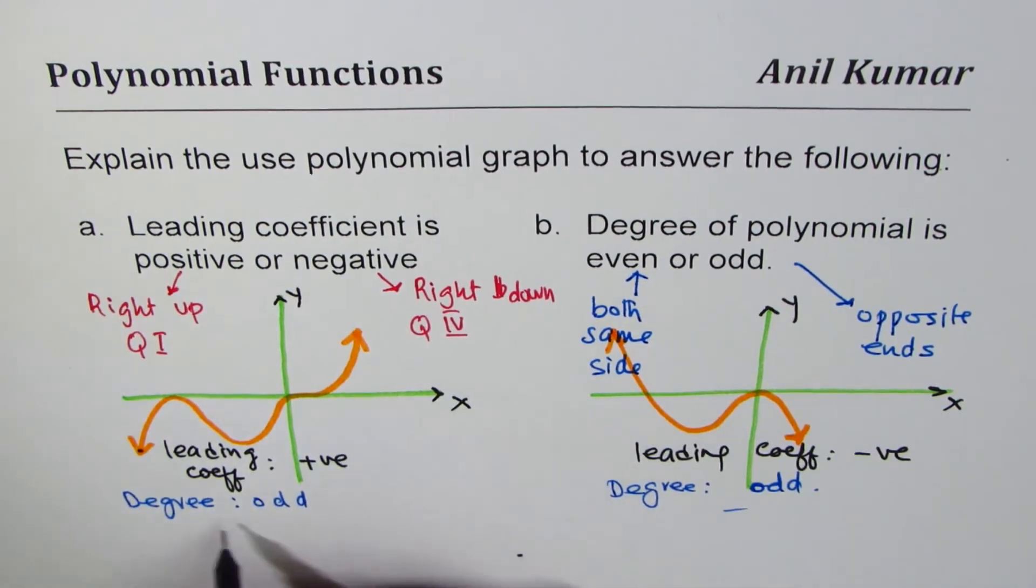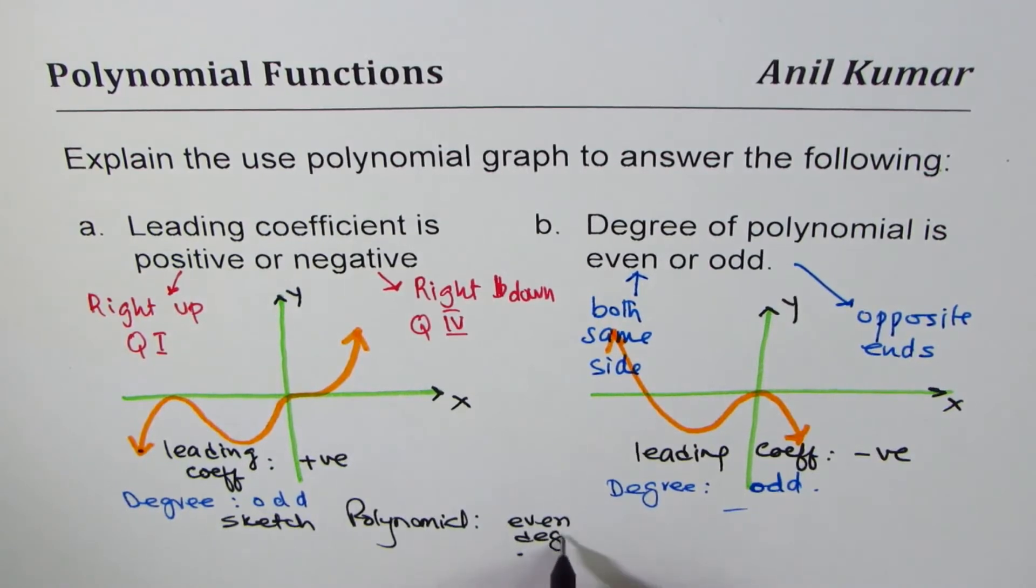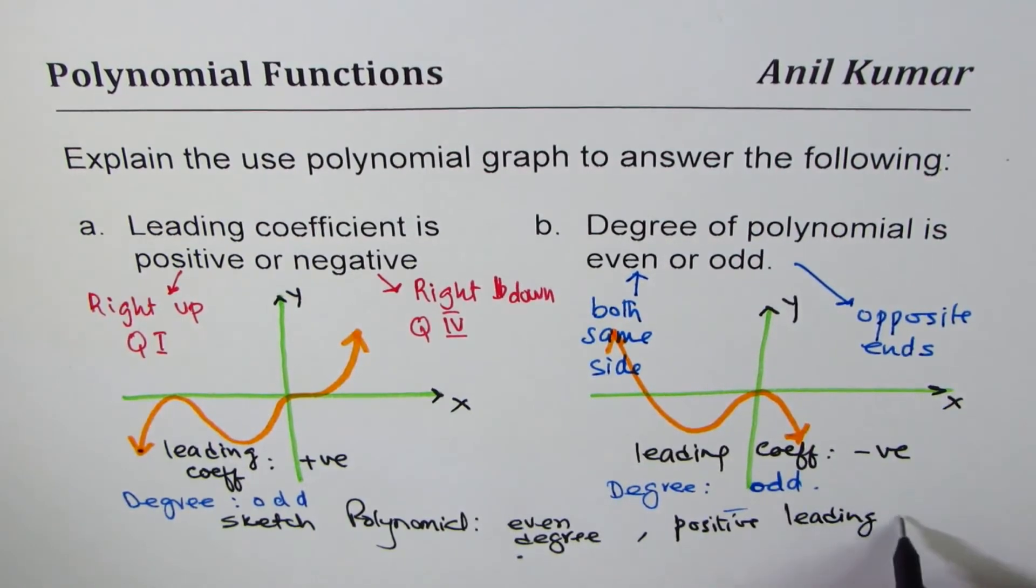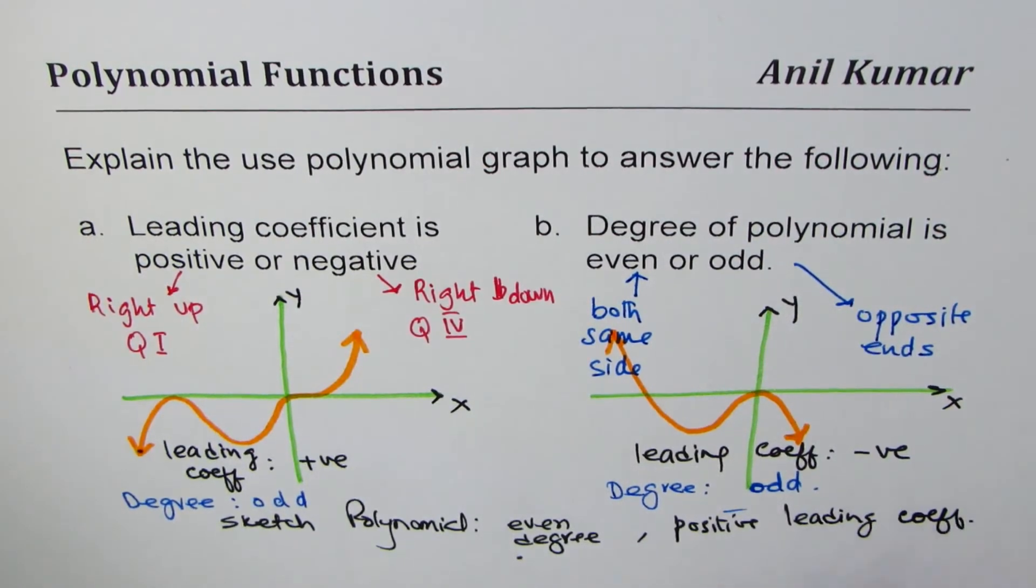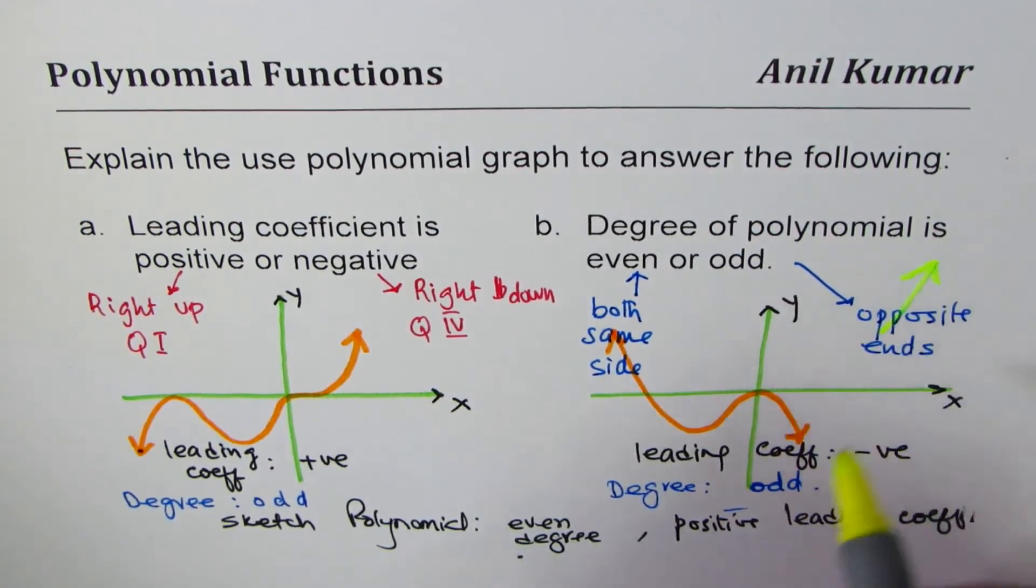So the question for you is to sketch polynomial with even degree and positive leading coefficient. Even degree means same side. It could be same side, do you see that? Positive means right side up.